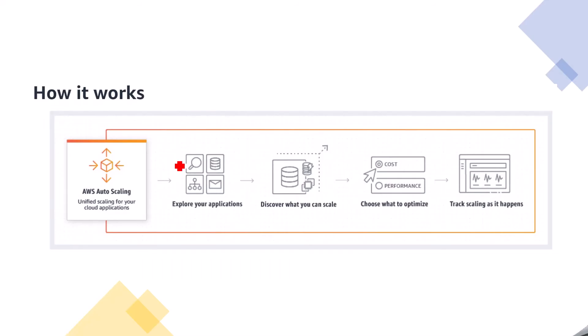Now let's look at how auto-scaling works. First, explore your applications and discover what you can scale. Generally, we scale EC2 instances. If the application is based on microservices, we can determine which microservices are frequently used, deploy them on EC2 instances, and apply dynamic scaling. You can also choose databases for auto-scaling to handle higher read and write operations without performance issues.